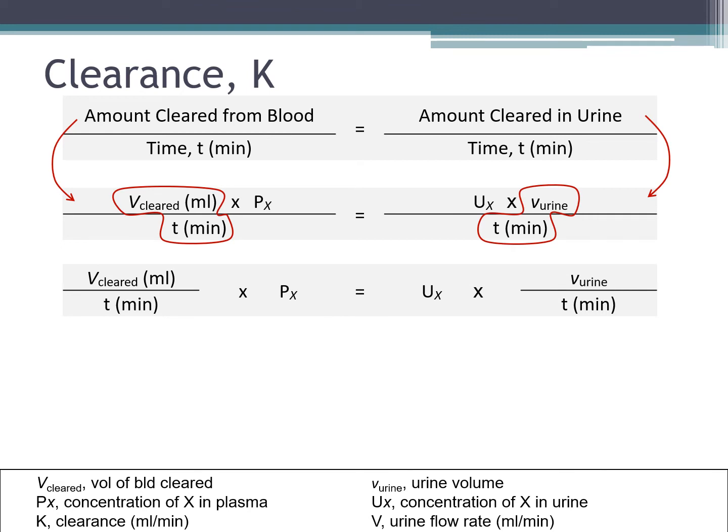You rearrange the equation, and you will get K, which is equal to the volume cleared per unit time, and you get V, which is equivalent to the urine flow rate. So clearance K equals to the concentration in the urine divided by the concentration in the plasma multiplied by V, which is the urine flow rate. So this is a very common formula that you will see in the medical textbooks.